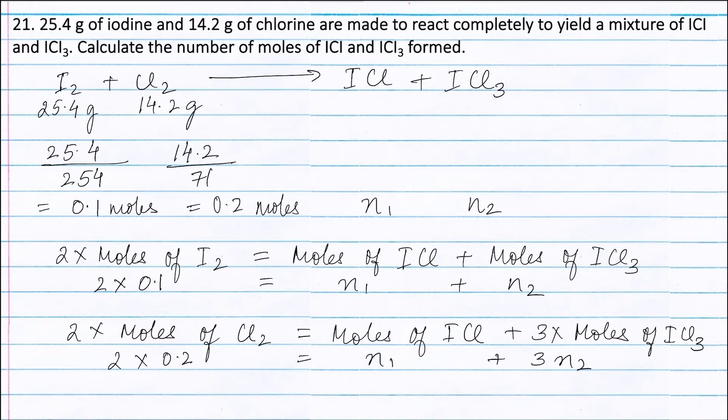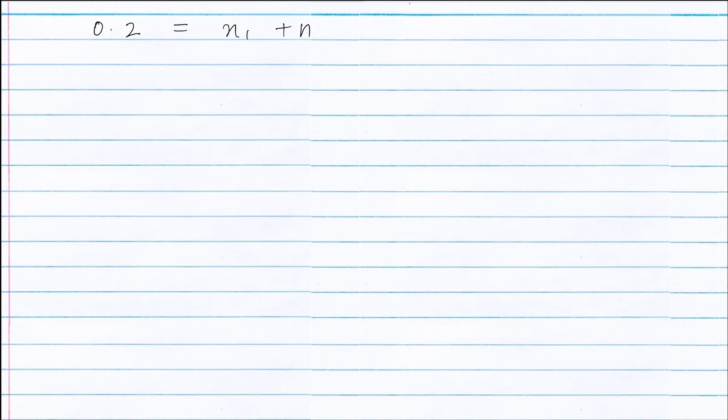Therefore, we get two equations: Equation 1: 0.2 = N1 + N2, and Equation 2: 0.4 = N1 + 3N2.